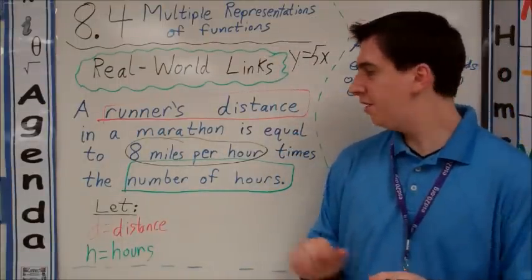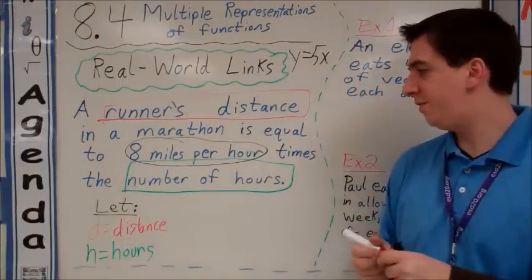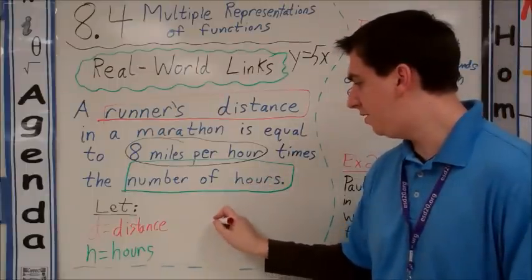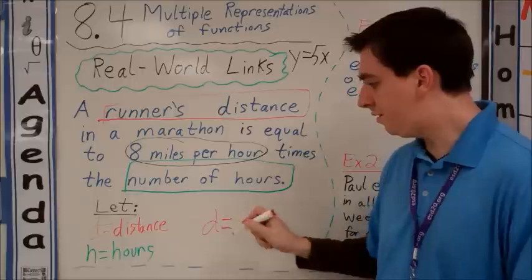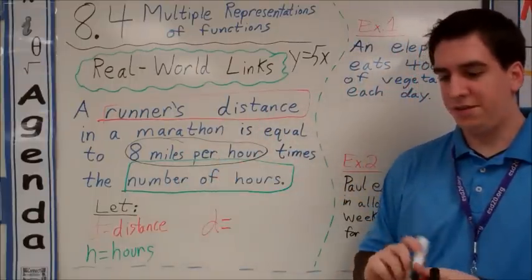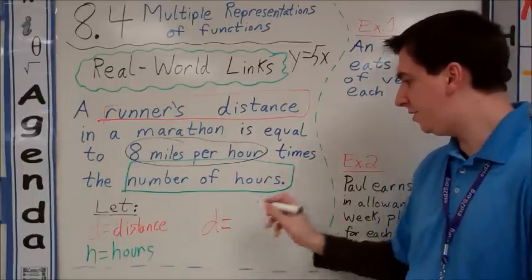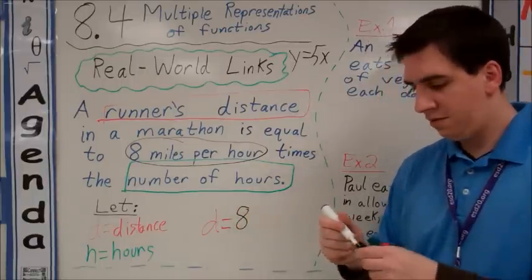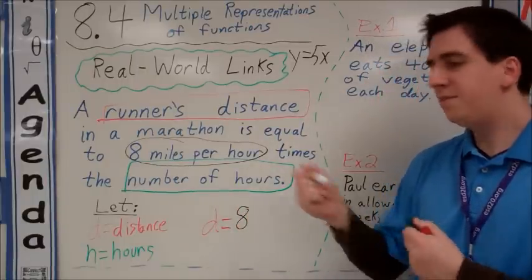If we're making an equation here, our total distance is what we're trying to find. So we're going to have d equals how many miles per hour does he run? 8. So we're going to have d equals 8 times the number of hours.